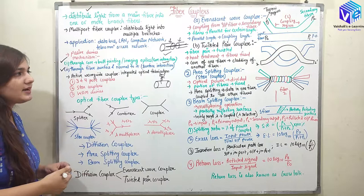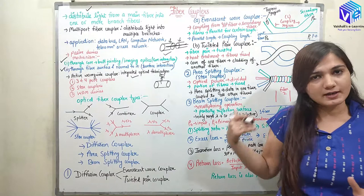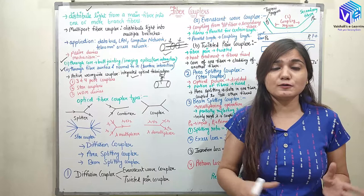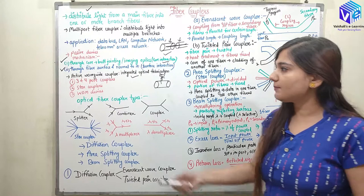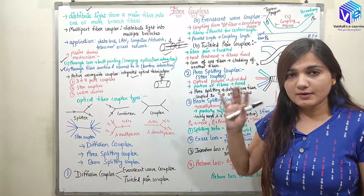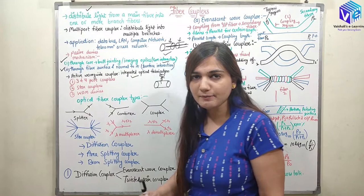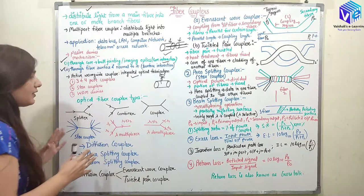After that, we have the active waveguide coupler, which uses integrated optical fabrication. We use a fabrication process with heating — fusing the fibers — to make them work as couplers. In active coupling, we can have three and four port couplers, star couplers, and wavelength division multiplexing couplers. We will talk about WDM devices separately; here we focus on three/four port couplers and star couplers.